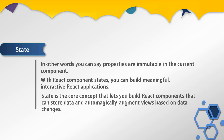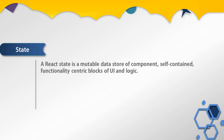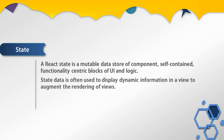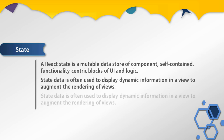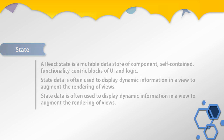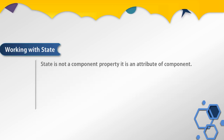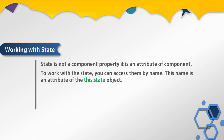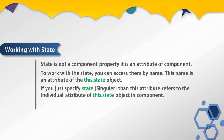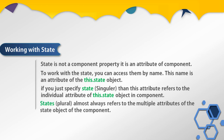State is a core concept that lets you build React components that can store data and augment views based on data changes. State is a mutable data store of components — self-contained, functionality-centric blocks of UI and logic. Mutable means state values can change at any time. State data is often used to display dynamic information in a view and to augment the rendering of views. State is not a component property; it is an attribute of the component.